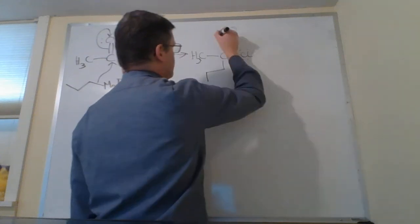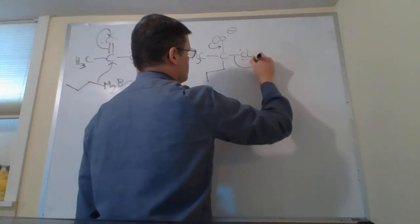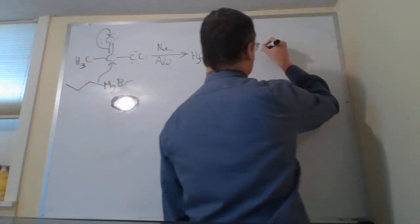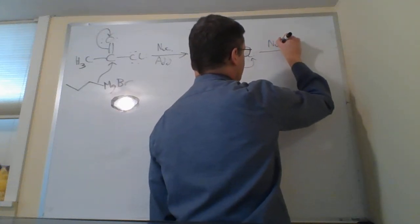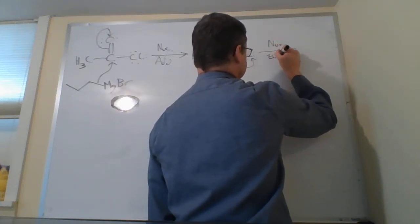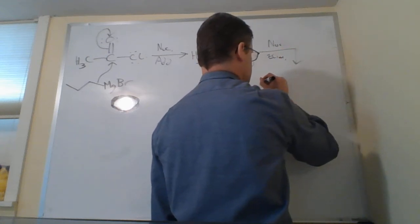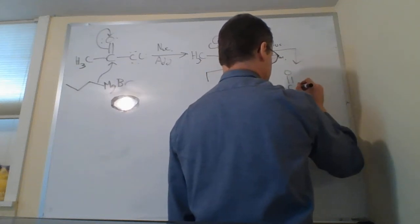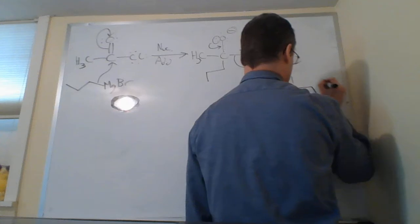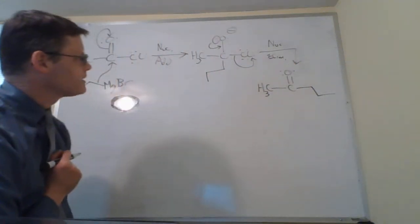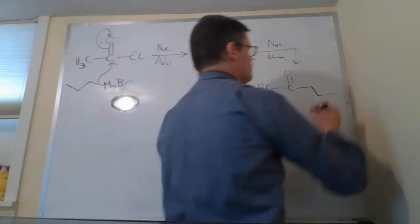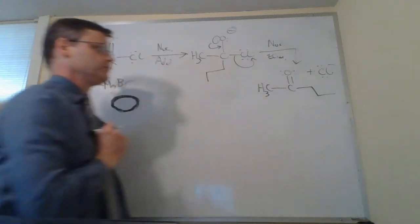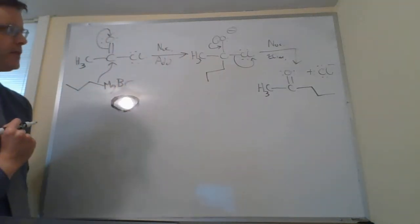We make a tetrahedral intermediate with three carbons here. And then in our second step we have a nucleophilic elimination. After that first nucleophilic acyl substitution, in those two elementary mechanistic steps, we've got Cl- here and we've got a ketone.